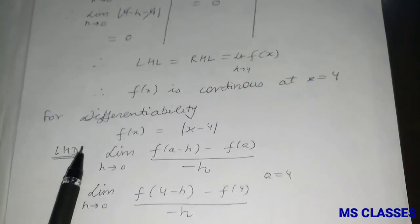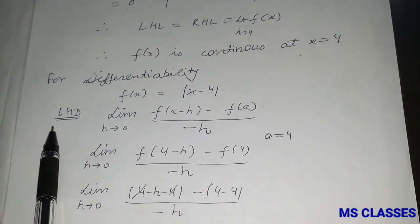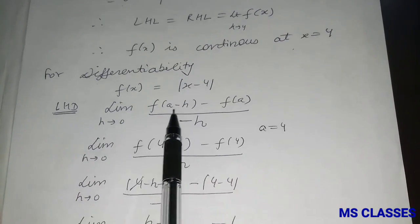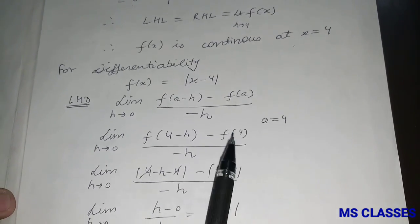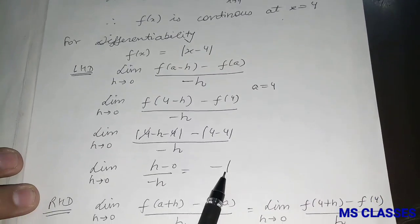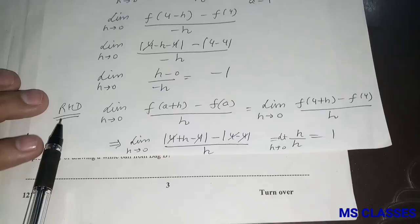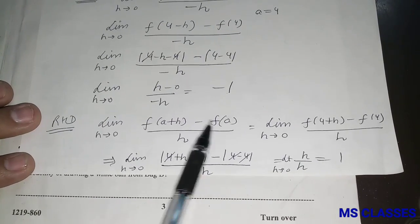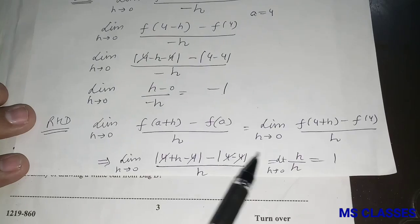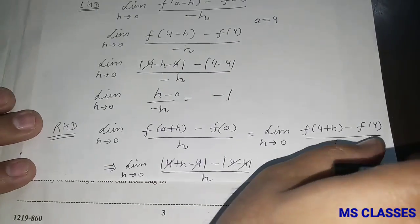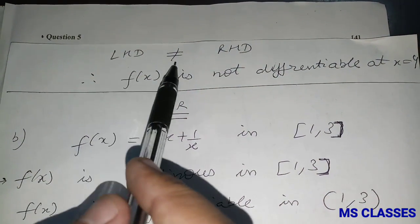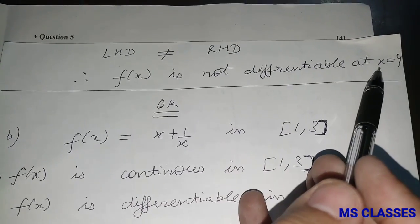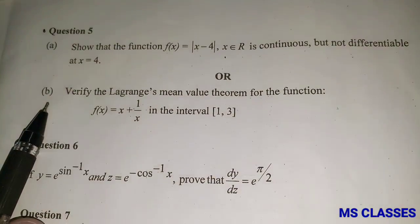For checking differentiability, the left-hand derivative: limit h→0 of [f(a - h) - f(a)] / (-h) gives -1. For the right-hand derivative: limit h→0 of [f(a + h) - f(a)] / h gives 1. Since the left-hand derivative ≠ right-hand derivative, f(x) is not differentiable at x = 4.